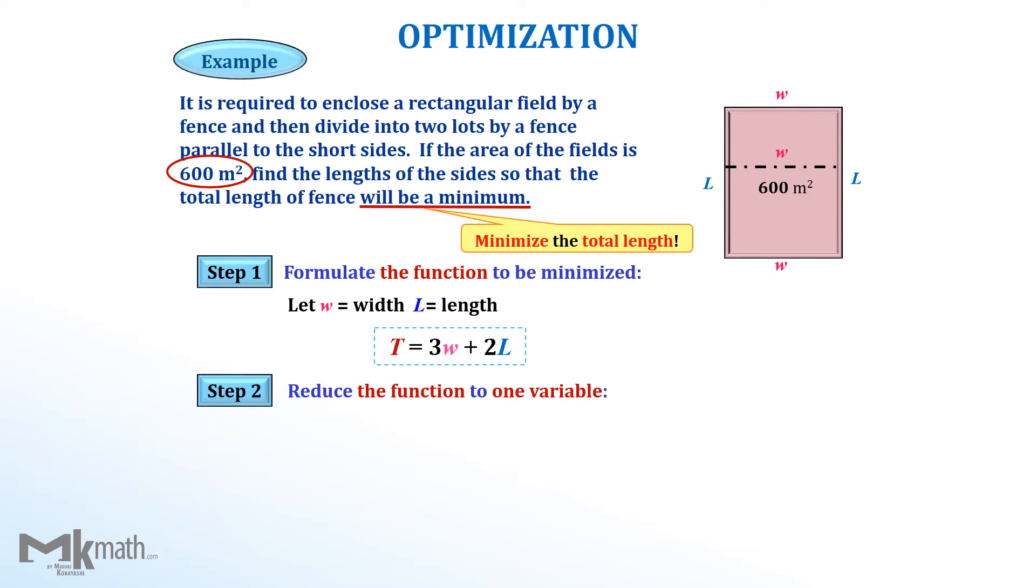Since the area of the field is 600 square meter, we can express length L equal to 600 divided by width W. L equals 600 over W. Or you could express that W equals 600 over L as well.